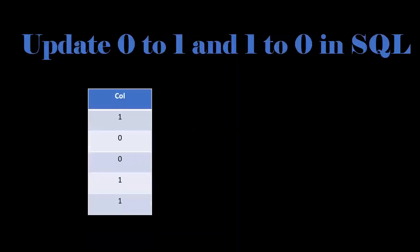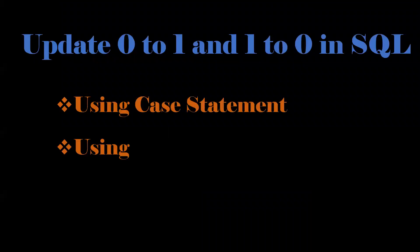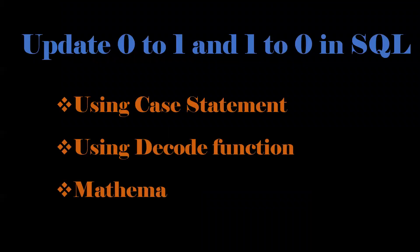Similar type of question is that if it is 0, we need to update as 1, and if it is 1, we need to update as 0. It can be achieved by using case statement, decode function, and a simple mathematical expression.